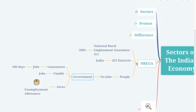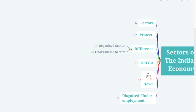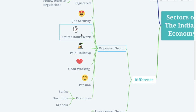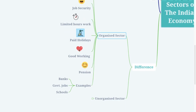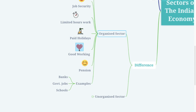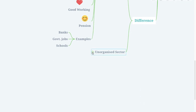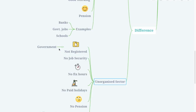Now let's see the difference between the organized sector and the unorganized sector. The organized sector is registered by the government and has to follow rules and regulations. People working in an organized sector have job security, limited working hours, paid holidays, good working conditions, and a pension after retirement. Examples include banks, government jobs, and schools.